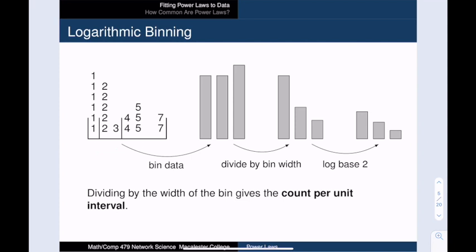We tally the number of data points in each bin. In bin number 1 we have six 1s. In bin number 2 we have six numbers total. In the last bin we have 7 points. Next we divide each tally by the size of the bin. This gives us a proper count per unit interval. Finally we take the logarithm of these normalized bin tallies, and we now have a base 2 log-log plot of our dataset.